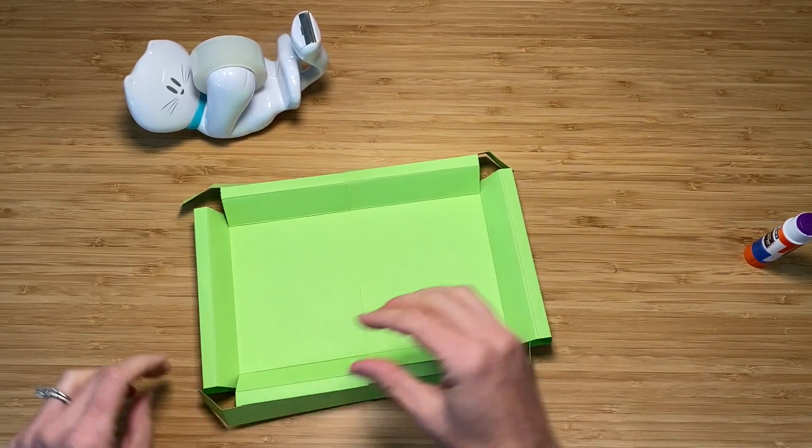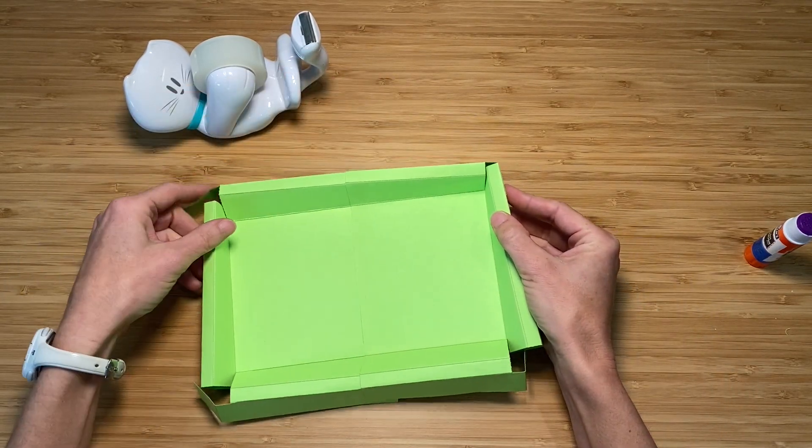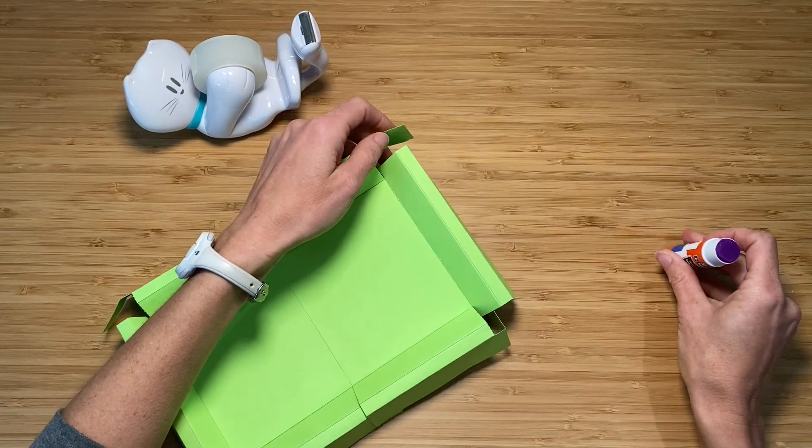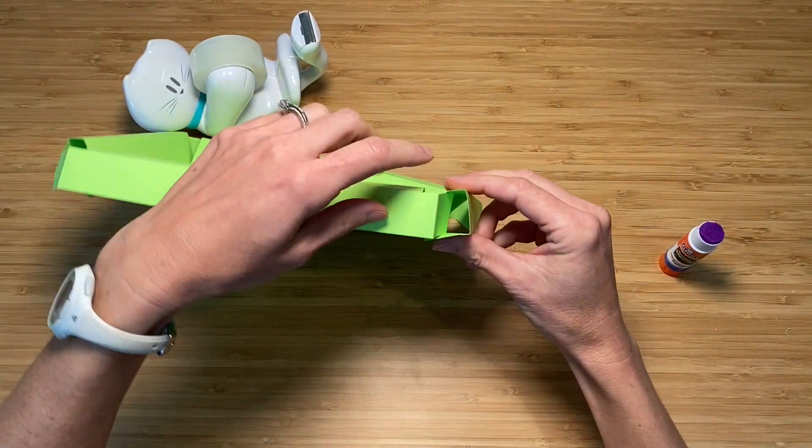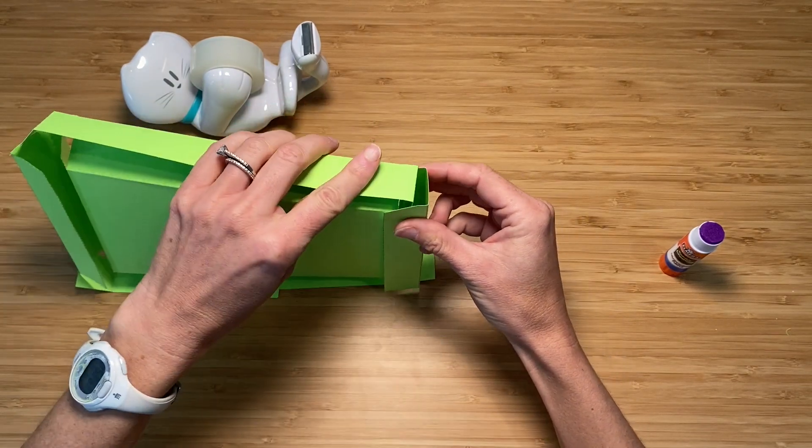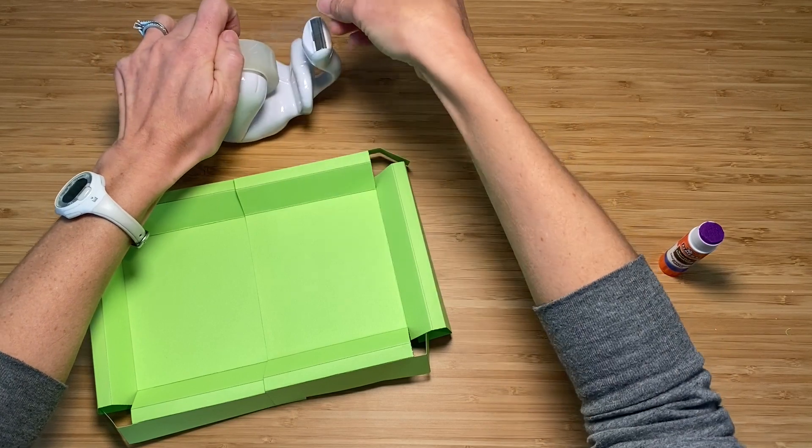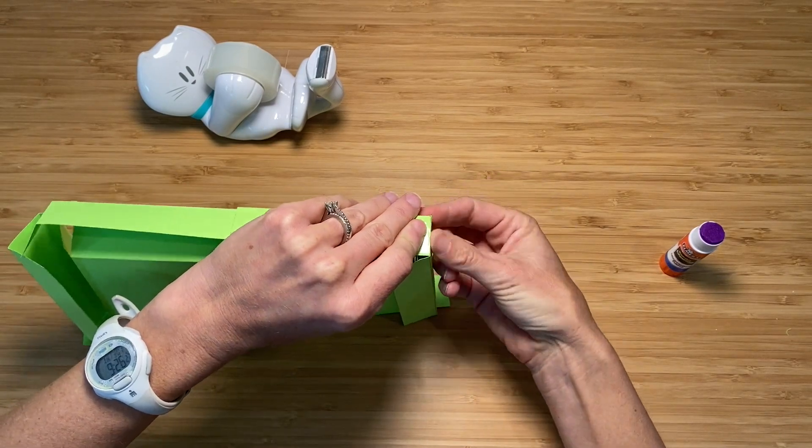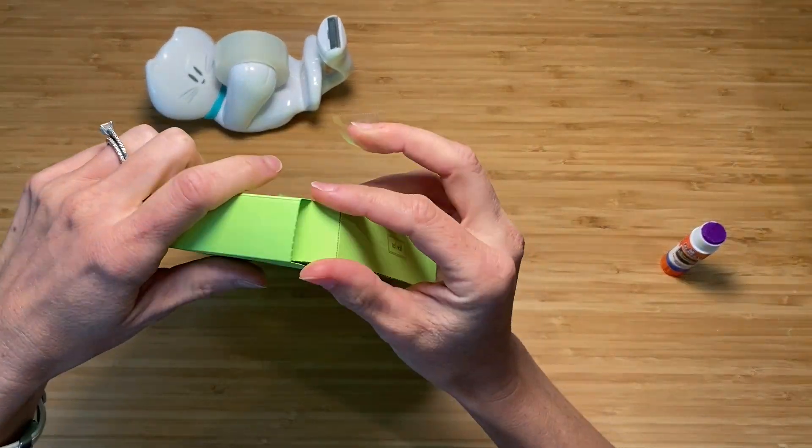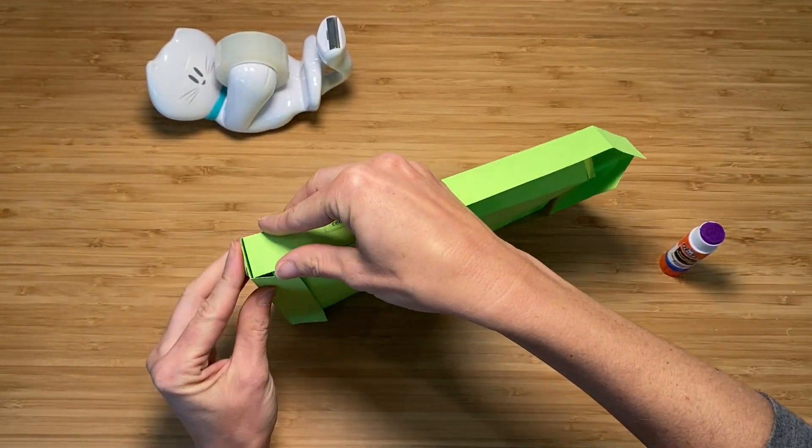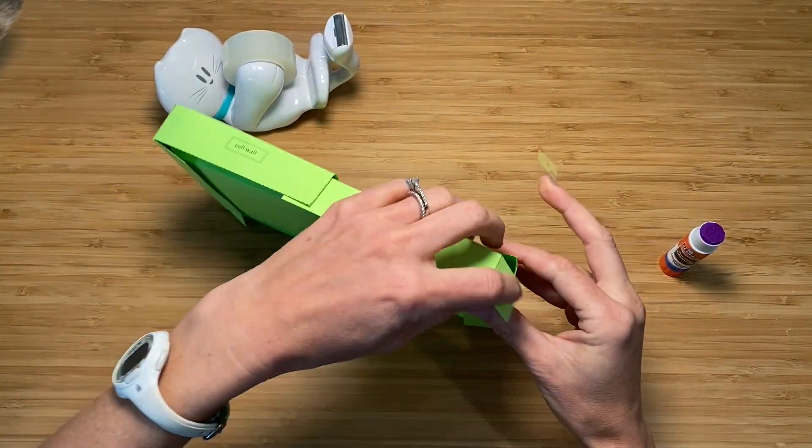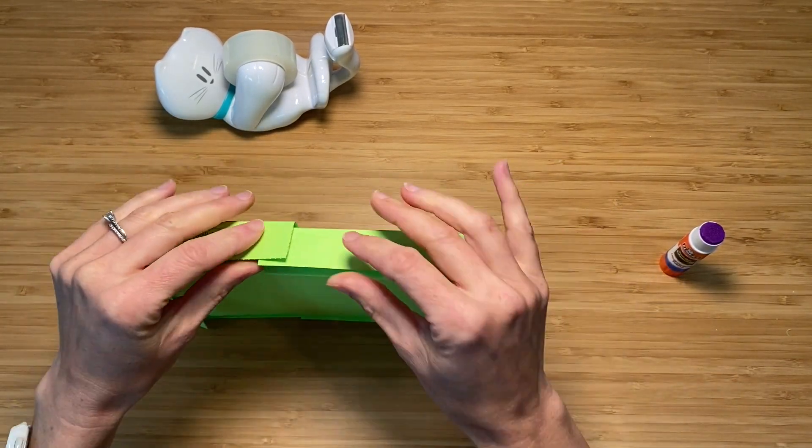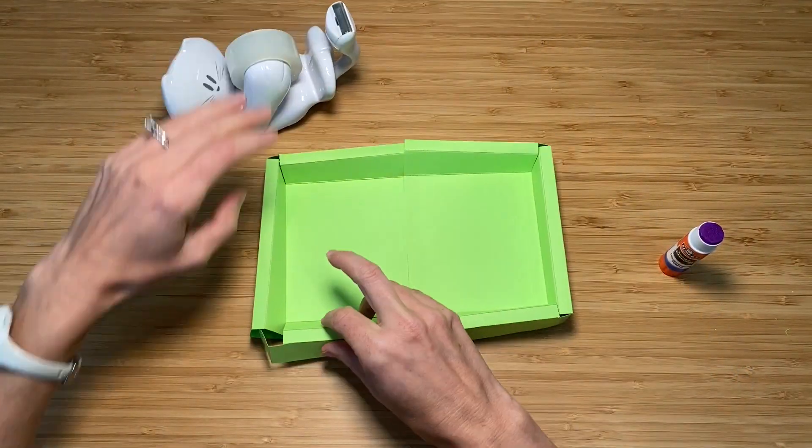Now you have a choice for how you like to use these little tabs here. The easiest thing is just to wrap them around the outside and glue them right here. But if you want it to look a little bit neater you can slide them in here like so and then put a little piece of tape on the edge. Do that for all four corners. Seems I didn't wait long enough for my glue to dry. I'll go back and fix that.